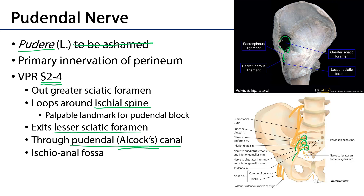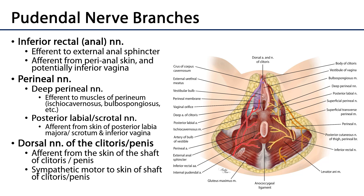Here we can see the complete path that the nerve takes into the perineum. Looking at the ischio-anal fossa, with the perineum of an illustrated individual in lithotomy position, we can see the branches of the pudendal nerve. There are inferior rectal — or inferior anal — nerves that branch off within the canal, heading out toward the external anal sphincter and the perianal skin. Branches may also be near the opening of the vagina, and even portions of the distal vagina may be innervated by these inferior rectal nerves.